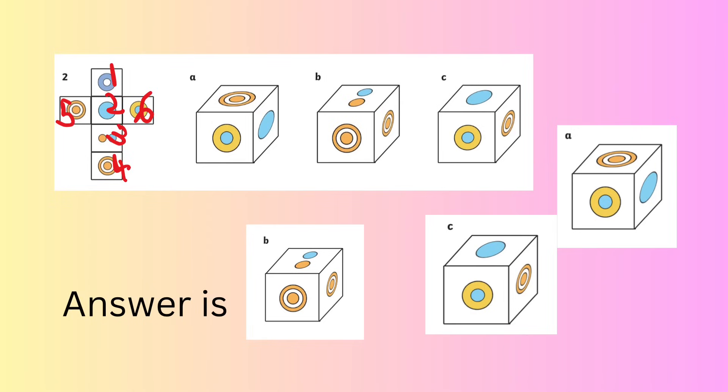C cannot be made—again violates the rule that 5 and 6 must be opposite. Yellow plus blue ring (6) is shown adjacent to an orange bullseye. Answer is B.